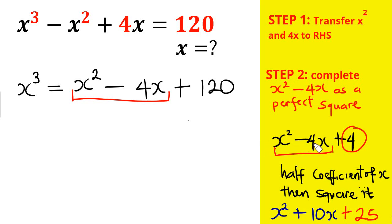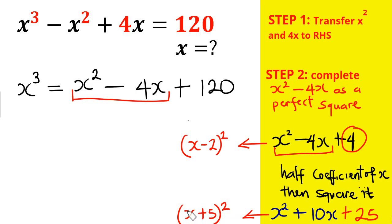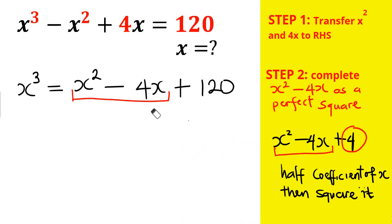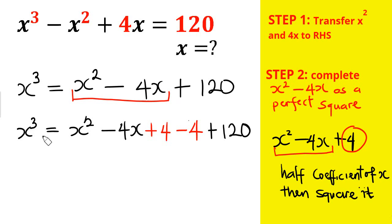x² - 4x + 4 is exactly the expansion of (x - 2)², and x² + 10x + 25 originates from (x + 5)². So I need to add 4 to complete the perfect square for x² - 4x.